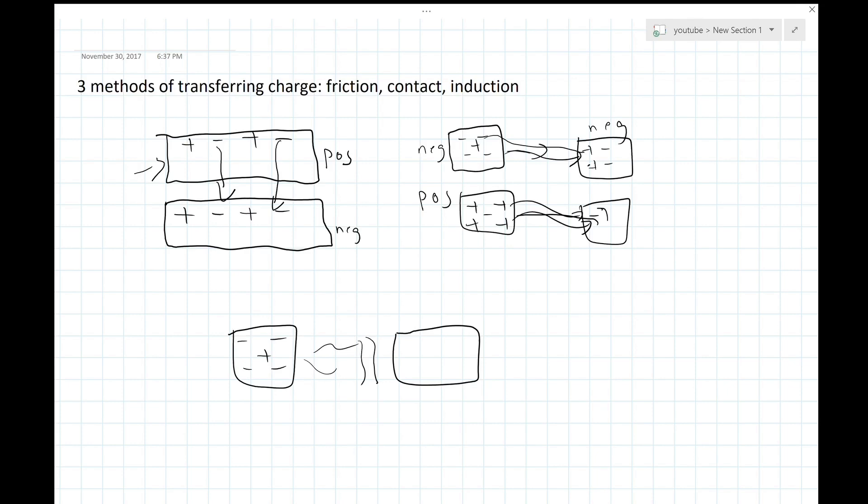and it induces a charge on the neutral object, which means since this object has a negative charge, its negative charge pulls the protons in this neutral object closer to where the object is - so proton, proton, proton - and repels the electrons because like charges repel and opposite charges attract.